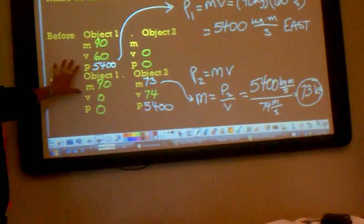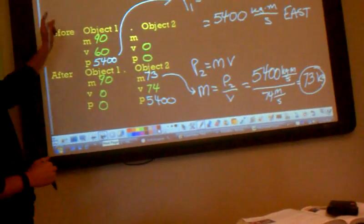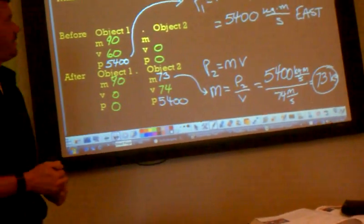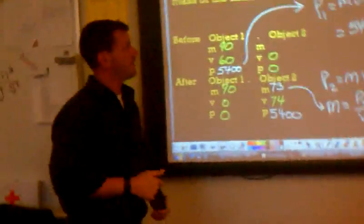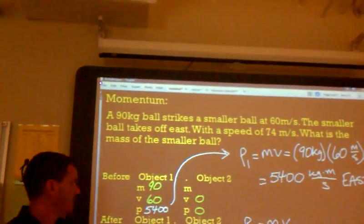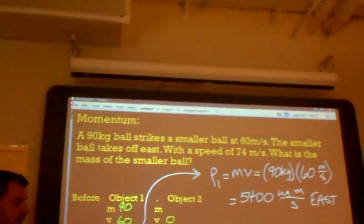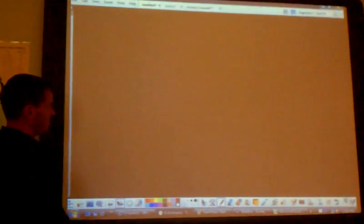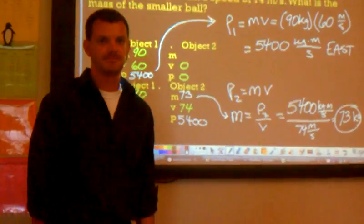Next question. This one you can do on your own. See if you were able to work it out. A 90 kilogram ball strikes a smaller ball at 60 meters per second. The smaller ball strikes off east with a speed of 74 meters per second. What is the mass of the smaller ball? The first thing I did was find the momentum for object one. As shown here. Then I was able to fill in the momentum for object two and calculate the mass. If you can do these, you should be good to go.